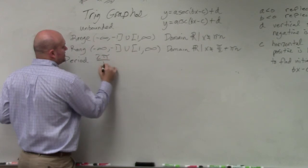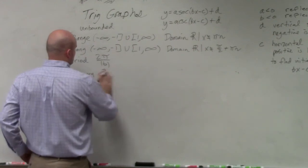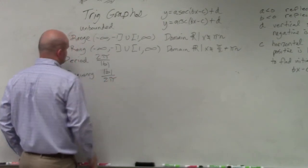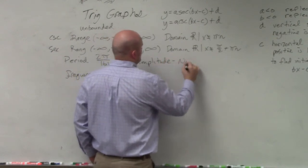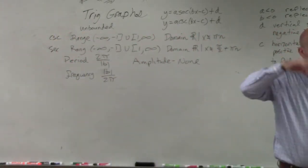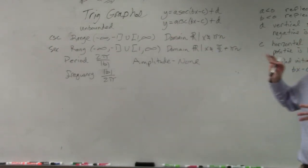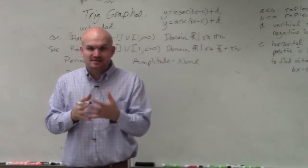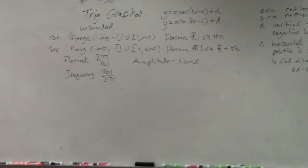The period, 2 pi divided by absolute value of b. Frequency, b divided by 2 pi. However, amplitude, there is none. Because remember, amplitude is basically the half distance from the max to the min. This graph doesn't have a max or a min. There is no max or min. But I want you to note that the amplitude and the period is exactly the same for the cosine. It still takes just as much time for it to complete one cycle.